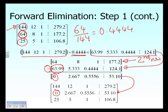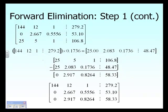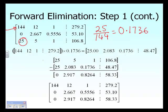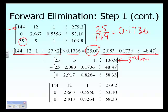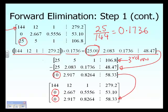The first step of forward elimination is not complete yet — we still need to make another element zero using the first row. We take 25 divided by 144, which gives 0.1736. We multiply the first row by 0.1736 to get 25, then subtract it from the third row to get zero, and replace the third row with the result.